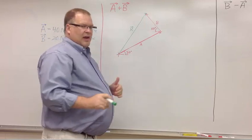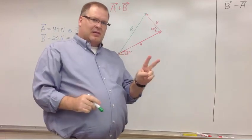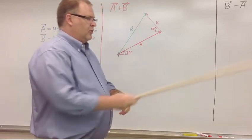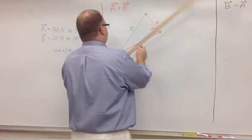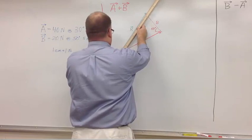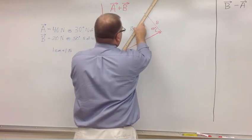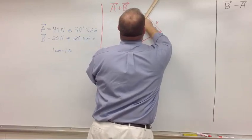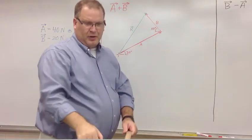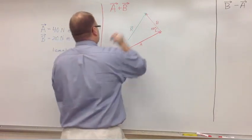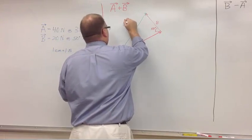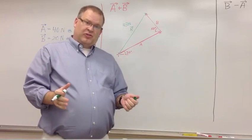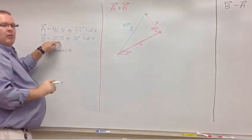This is my resultant vector. So I have to do two things now. I have to get the magnitude and the direction. So the magnitude. Easy enough. I just measure its length. It is approximately 43 centimeters long. So that would be 43 newtons. Don't forget, you've got to go back to the original units.